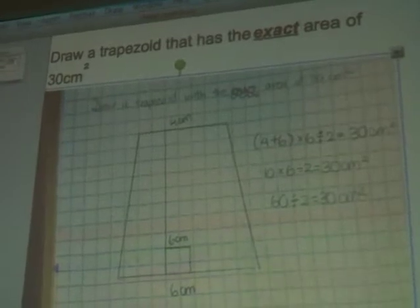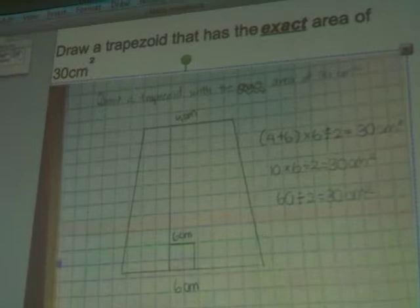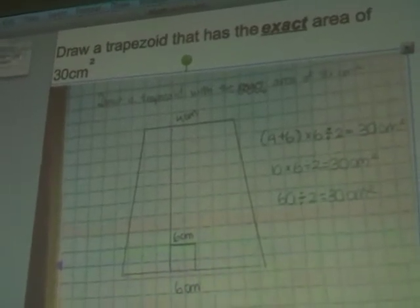But then for a trapezoid, you have to divide it by 2. So, 60 divided by 2 equals 30, so that's how I got my trapezoid.